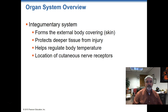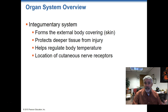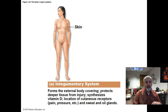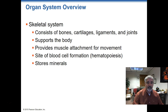The first system is the integumentary system, which is the skin — all that skin that covers our body. It protects the deeper tissues, regulates body temperature, and contains many nerve cells and nerve endings for pain, pressure, sense, and various other things. It's interesting that whenever they talk about the integumentary system in books, it's always a picture of a naked woman — every single book I've looked at, that's the way it is.